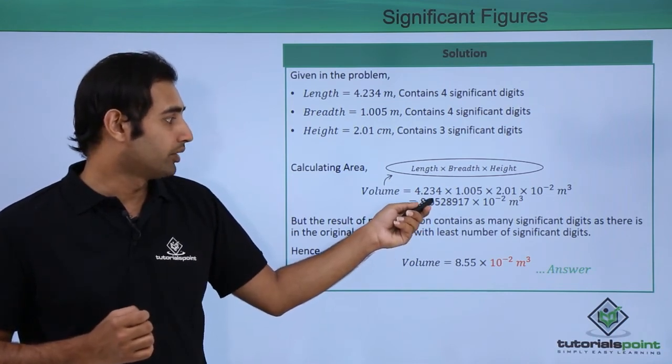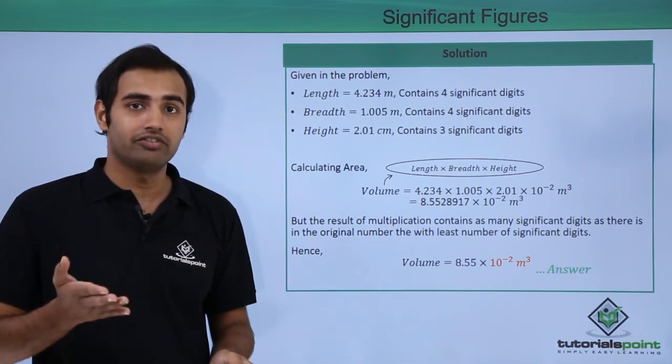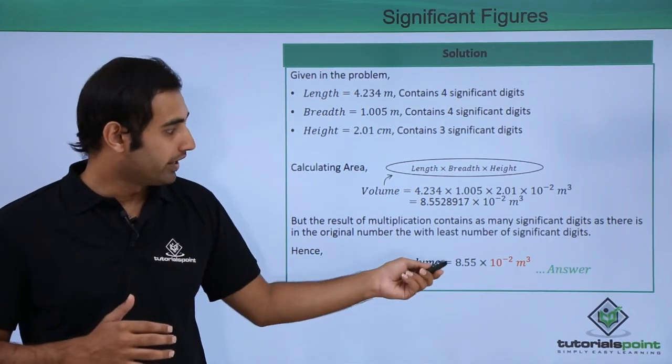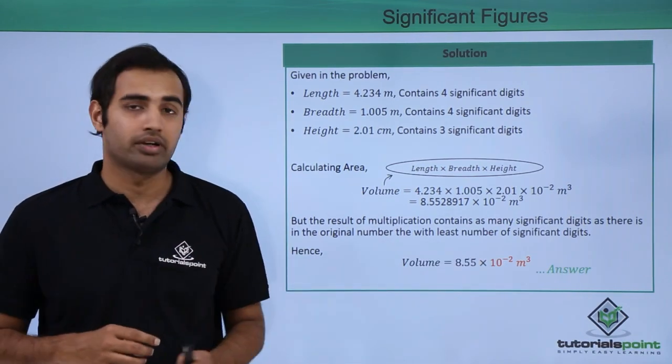Now the next number clearly is 2 which is less than 5 and in the rounding process it can be dropped off. The final answer comes out to be 8.55 into 10 raised to power minus 2 meter cube.